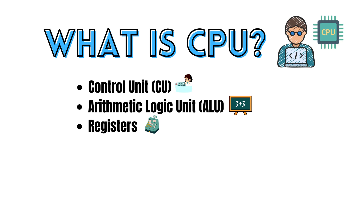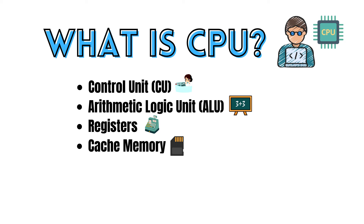Let's find out what cache is used for in the CPU. Cache memory is a small but very fast type of volatile computer memory that provides high-speed data access to a processor and stores frequently used computer programs, applications, and data. It helps reduce the time it takes for the CPU to access data in the computer's main memory, called RAM.